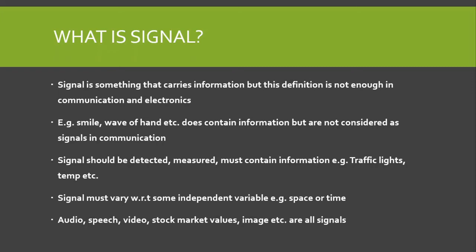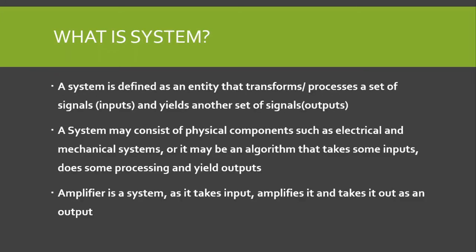Another important characteristic of signals is that they must vary with respect to some independent variable, such as space or time. Examples include audio, speech, video, stock market values, and images — all of these are signals as they vary with respect to space or time. Even temperature and traffic lights vary with respect to time, so they qualify as signals.